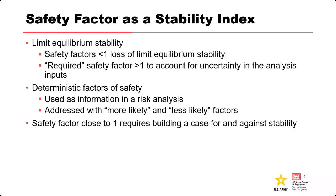In limit equilibrium stability analysis, factors of safety less than one basically mean there's a loss of stability. The required safety factor being greater than one — usually something like 1.4 — is considered good, and that additional margin above one is meant to account for uncertainty in our inputs. It's a deterministic factor of safety, and in a risk analysis you can usually incorporate it as a more or less likely factor.